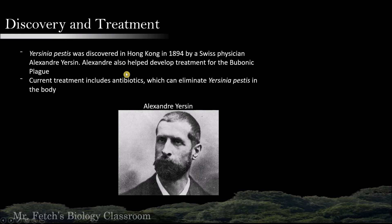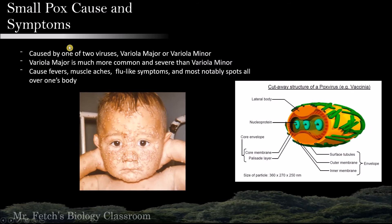Smallpox is caused by one of two viruses: variola major or variola minor. Variola major is much more common and severe than variola minor, and we will be talking about variola major in today's lecture. It causes fevers, muscle aches, flu-like symptoms, and most notably spots all over people's skin.